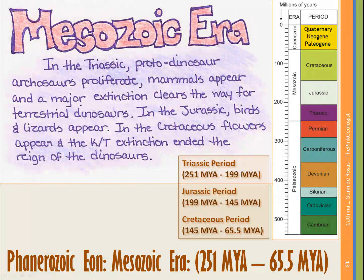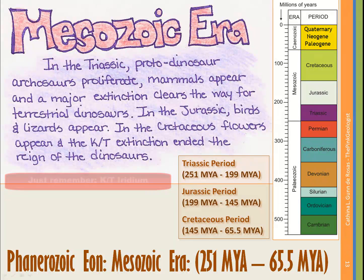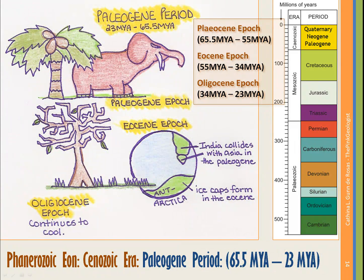In the Triassic, our proto-dinosaurs proliferated and mammals showed up. Then a major extinction at the end of the Triassic cleared the way, and terrestrial dinosaurs took over through the Jurassic and the Cretaceous. In the Jurassic we saw birds and lizards show up. In the Cretaceous we saw our first flowers, and then the huge KT boundary extinction event — probably from the Yucatan impact — ended the reign of the dinosaurs. As we move into the Cenozoic Era, covering about 65.5 million years ago to the present day, the first period is the Paleogene period.